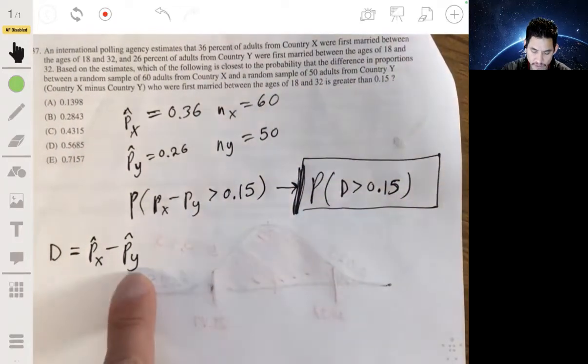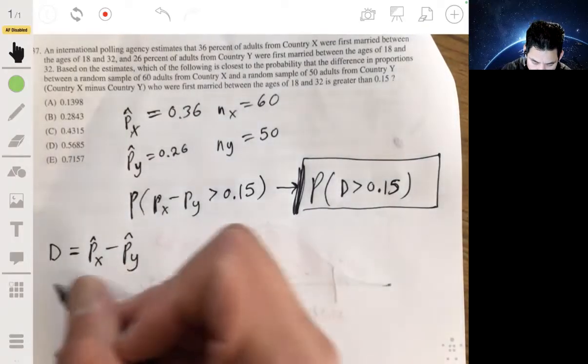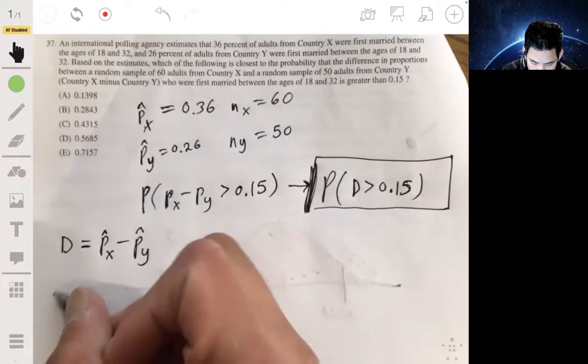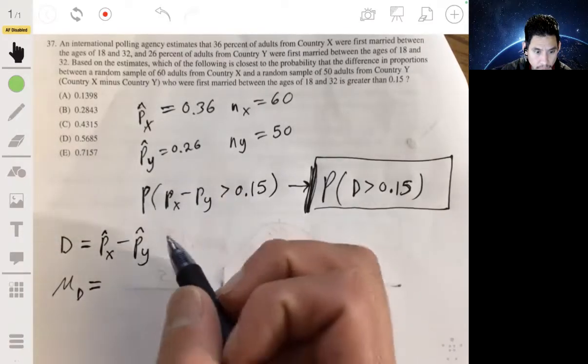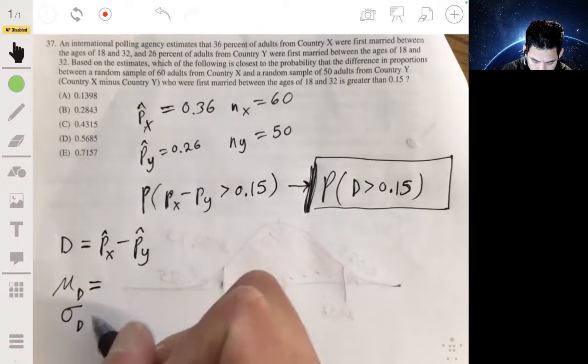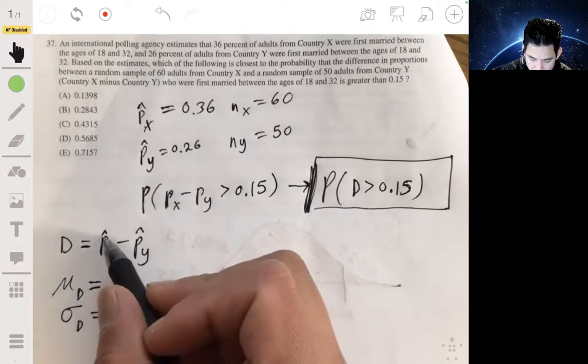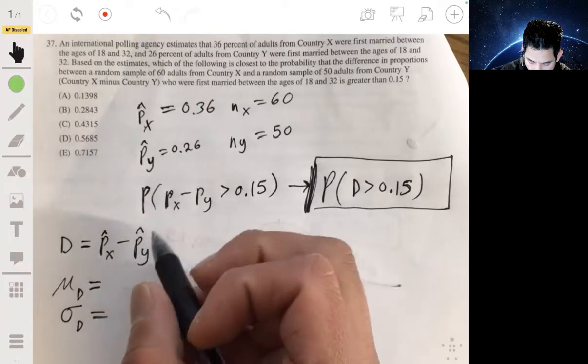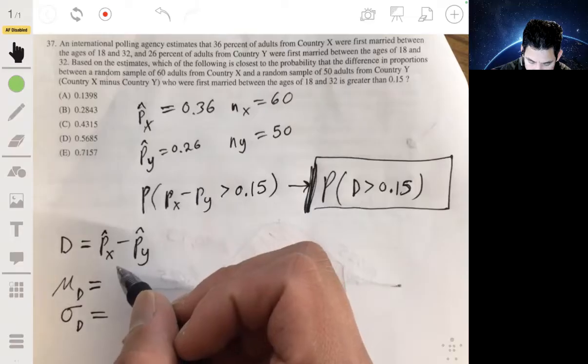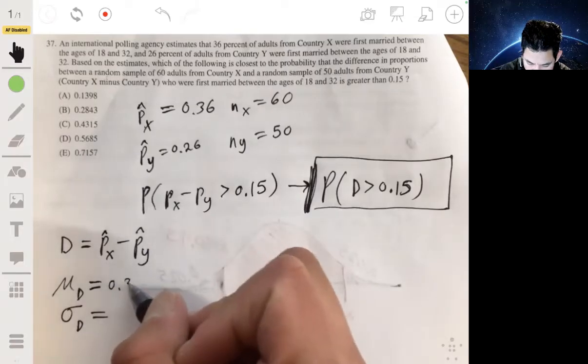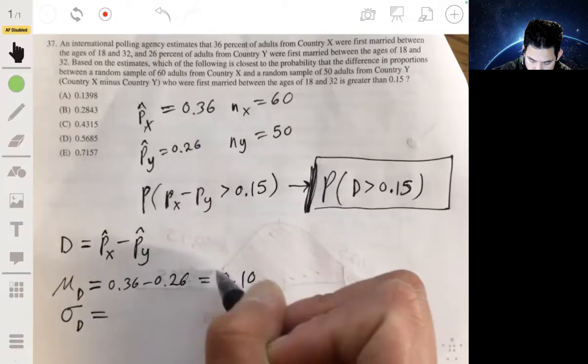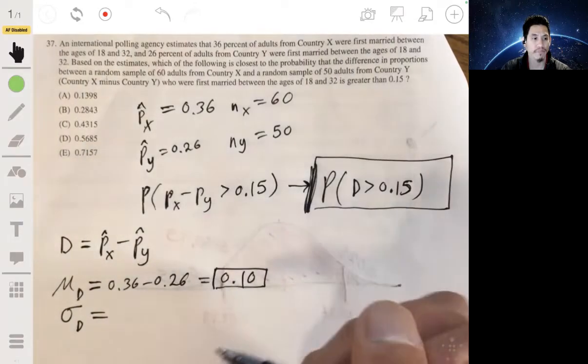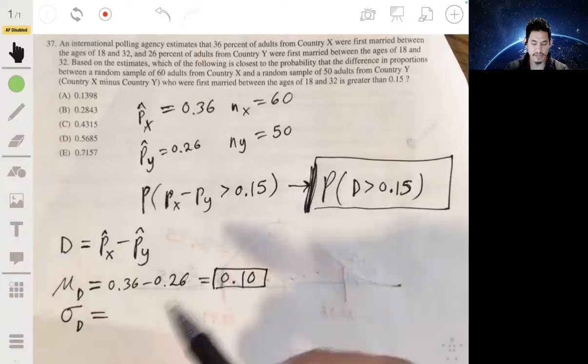So what we want to do is find the mean of D. What would the mean of D be? And the standard deviation of D. So the mean of D is just the mean of X minus the mean of Y, which would just be 0.36 minus 0.26, which would be 0.1.